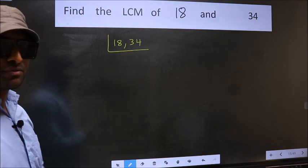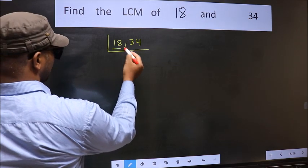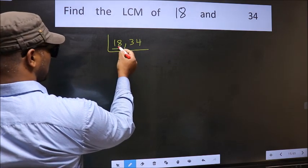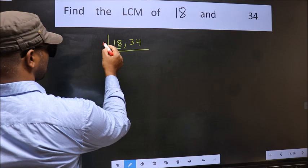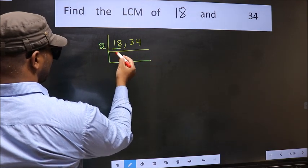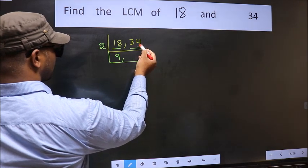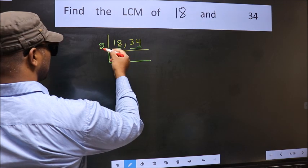Now you should focus on the first number which is 18 here. For this number, last digit 8, even. So take 2. When do we get 18 in the 2 table? 2 nines, 18. The other number 34, last digit 4, even. So this is divisible by 2.